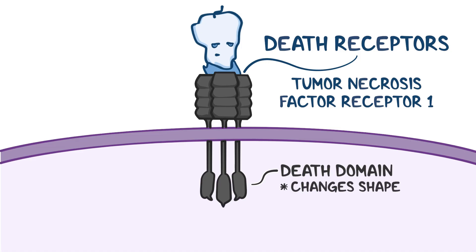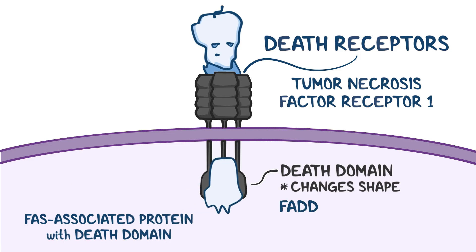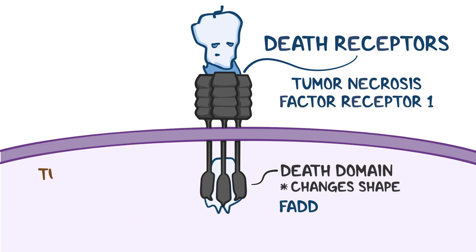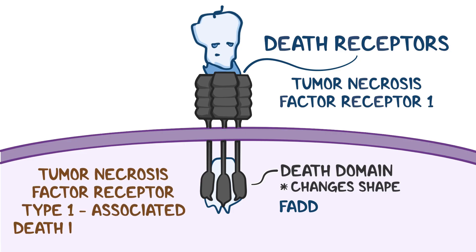When the TNF-alpha binds to the tumor necrosis factor receptor 1, the death domain changes its shape and is able to bind to two proteins. One is called FAS-associated protein with death domain, or FADD, and the other is called tumor necrosis factor receptor type 1-associated death domain protein, or TRADD.